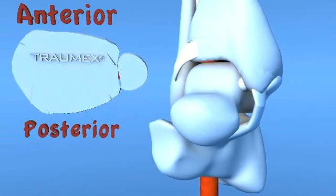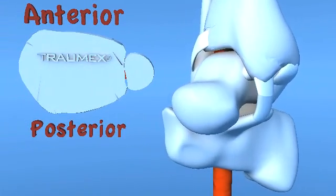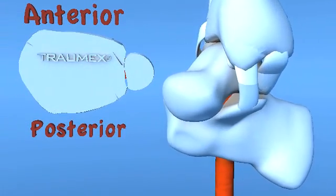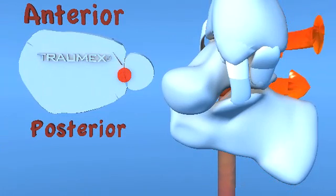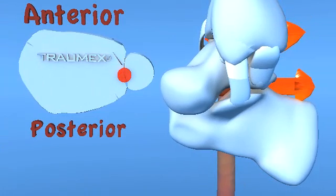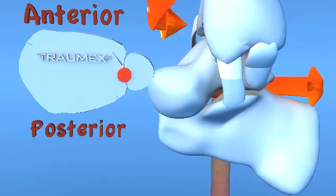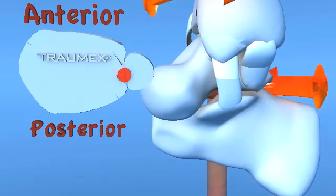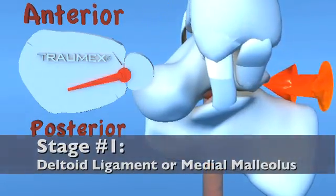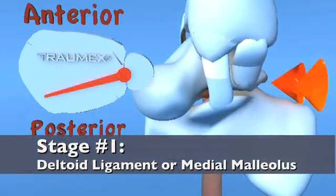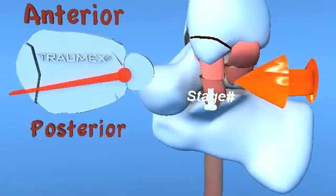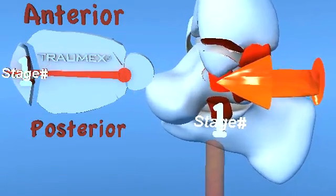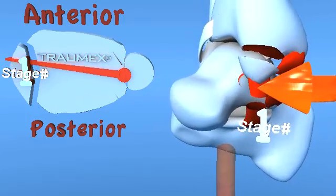With the foot in a fixed pronated position, the forces start along the medial axis of the tibia. The leg undergoes an internal rotation, creating tension on the deltoid ligament complex. In a stage 1 injury, one of two pathologies may occur: rupture of the deltoid ligament complex, or a transverse fracture of the medial malleolus.